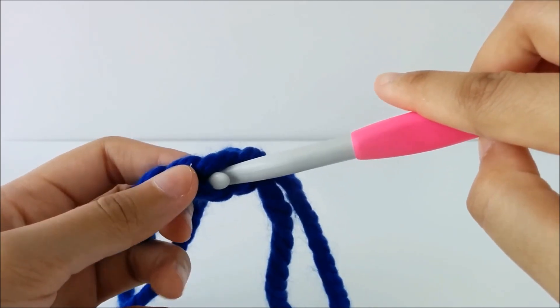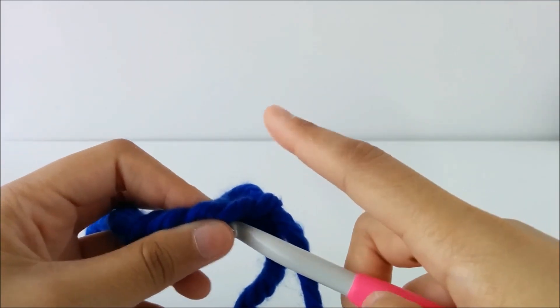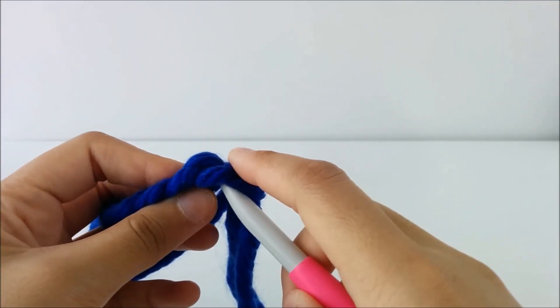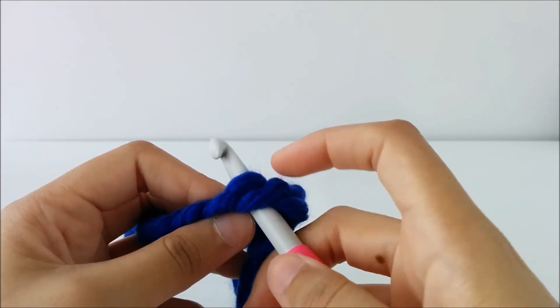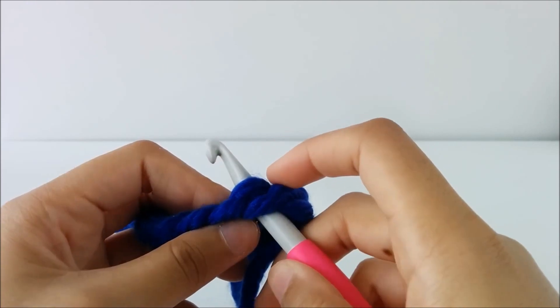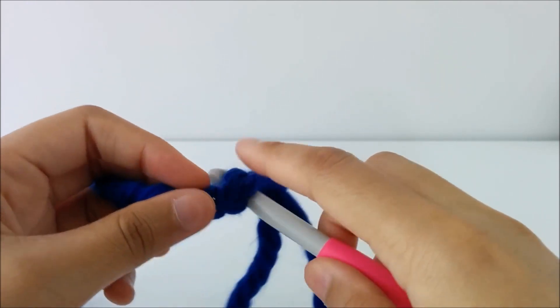You're going to go into the middle of the v, and you're going to get your hook to go underneath this front, this loop, and then this bump. Then you only have one loop on the bottom side.